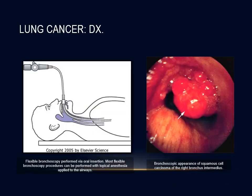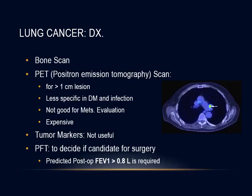Bronchoscopic images of lung cancer show endobronchial lesions with irregular shape seen in the proximal trachea. Other diagnostic modalities include bone scan for metastatic bone lesions, and positron emission tomography (PET scan) used for lesions more than one centimeter in diameter. PET scan is less specific in diabetic patients and those with infections, and is not good for metastatic evaluation; it is not a primary diagnostic test and is expensive. Tumor markers are still under investigation and currently none are useful.